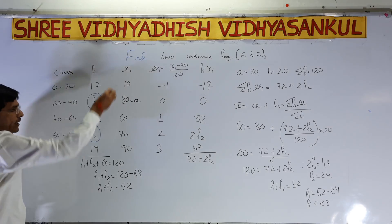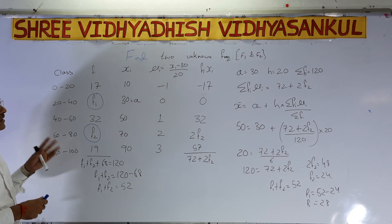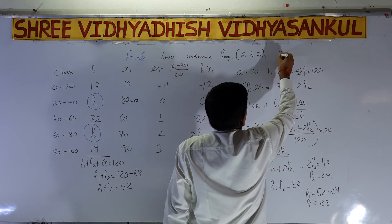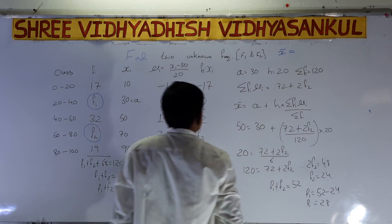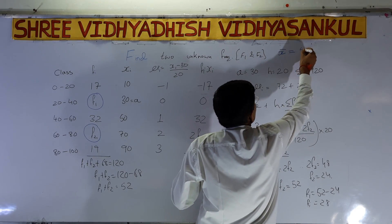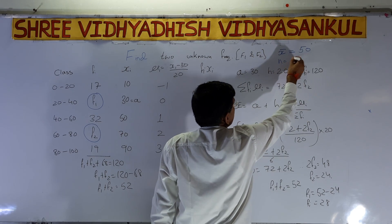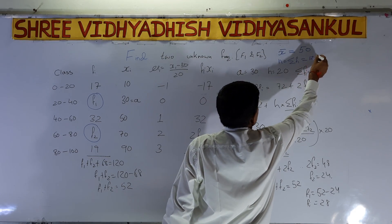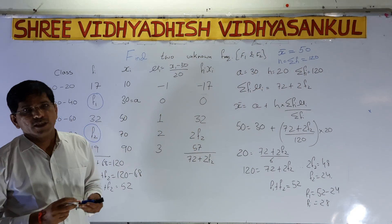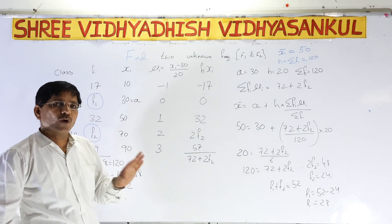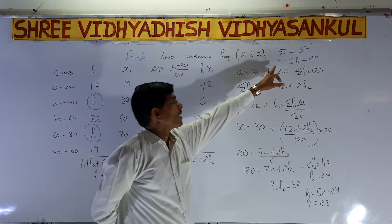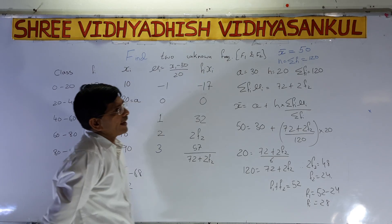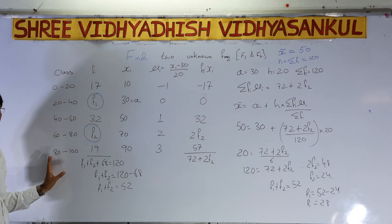First of all, how to find xi — that is important. Always remember what is given in the question. x-bar (the mean) is given — that is 50. Also, n or sigma fi (the total frequency) is given — that is 120. When two unknown frequencies have to be found, always remember: the mean is always given, and n (sigma fi) is always given.